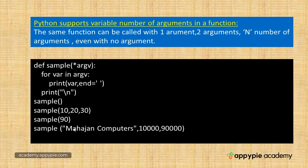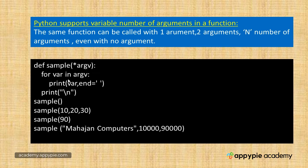Here I am calling the sample function again with three arguments, but I've done this deliberately to show that we can call such functions with different data types. 'Mahajan Computers' is a string, and 10,000 and 90,000 are of integer data type. So sample('Mahajan Computers', 10000, 90000) — args would contain three elements, and all three values will be displayed.